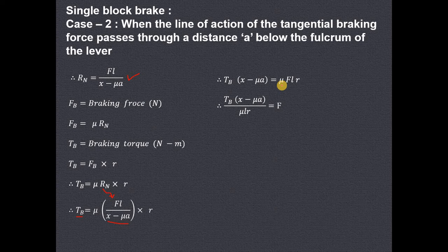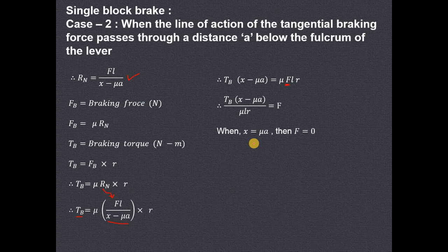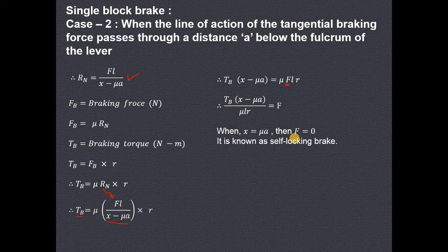This concept we have already studied in applied mechanics. To find the force applied by the person at the end of the lever — which is the external force, not the braking force — it is F equals TB times (X minus mu·A) divided by mu times L times R. Now if X equals mu·A, then (X minus mu·A) becomes zero, meaning the force applied by the person at the end of the lever will be zero.